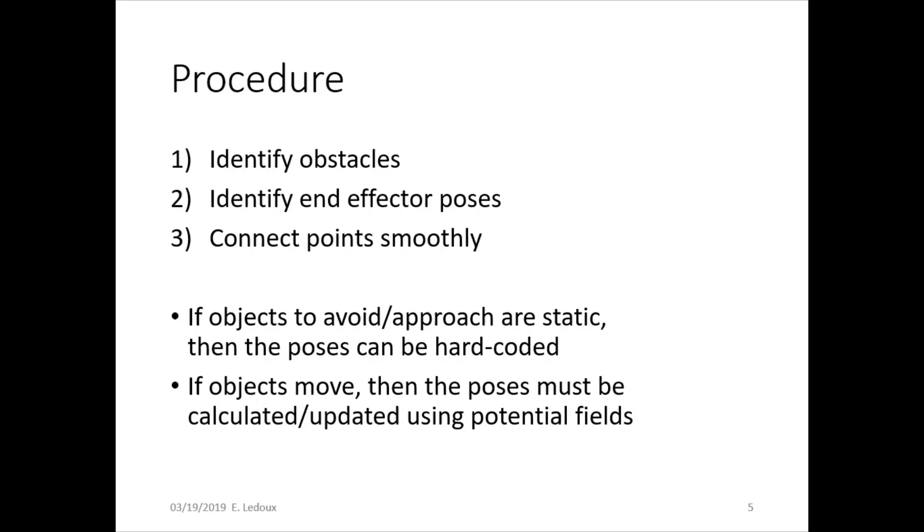If the objects move, then the poses must be calculated and updated using potential fields. So for this, the robot would need a sensor or a camera or something so that it would know what new things came into the environment and where the existing things had moved to.